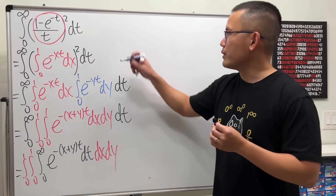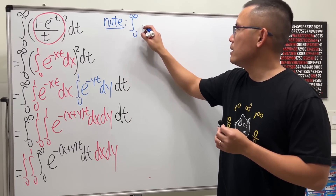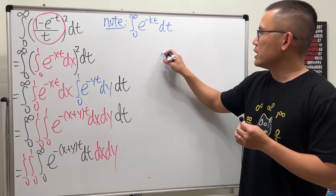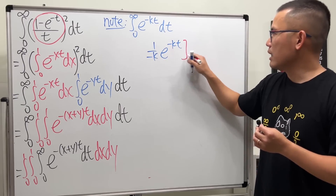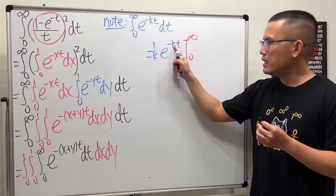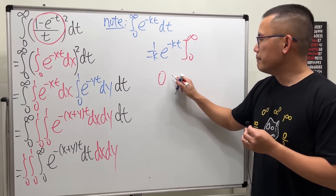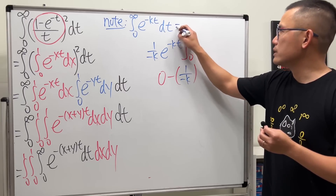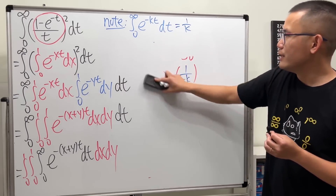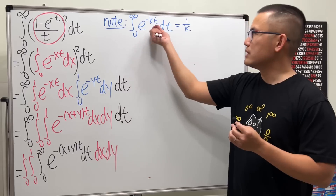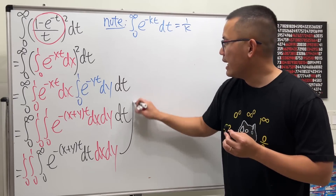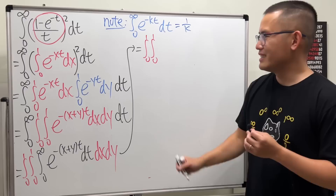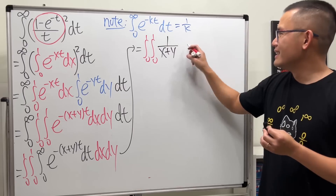We look at the integral from zero to infinity of e to the negative (x plus y)t dt, then dx dy. A useful note: integrating from zero to infinity of e to the negative kt gives one over k — because plugging in infinity gives zero, and plugging in zero gives one, leaving one over negative k times negative one equals one over k. In our situation, (x plus y) plays the role of k, so the integral simplifies to the double integral from zero to one, zero to one of one over (x plus y) dx dy.